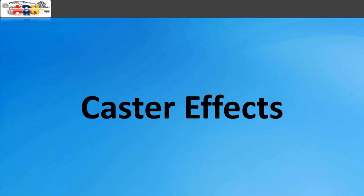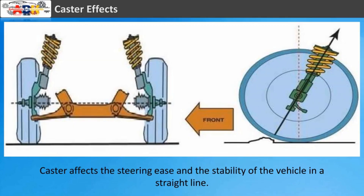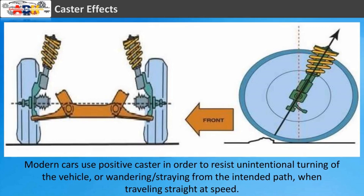Caster affects the steering ease and the stability of the vehicle in a straight line. Modern cars use positive caster in order to resist unintentional turning of the vehicle, or wandering — straying from the intended path when traveling straight at speed.